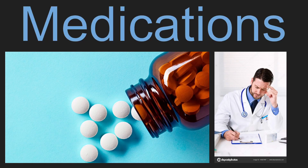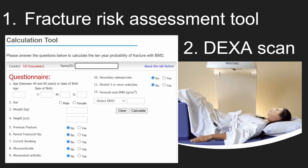When it comes to prescribing medications for osteoporosis, your doctor is going to be thinking about the chances of you breaking a bone. There are two tools doctors use to make this decision: one is the fracture risk assessment survey, as shown here, and the second is the DEXA scan, which is an x-ray shown here.